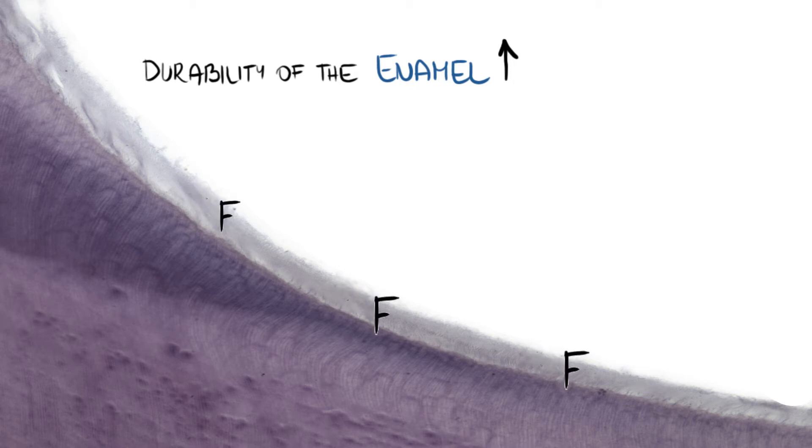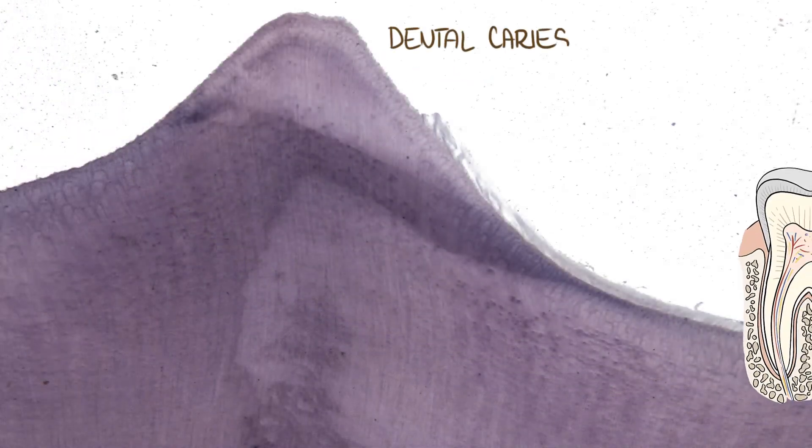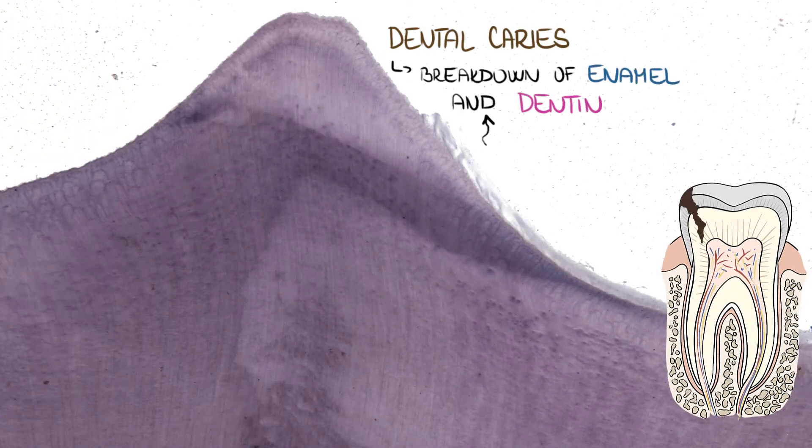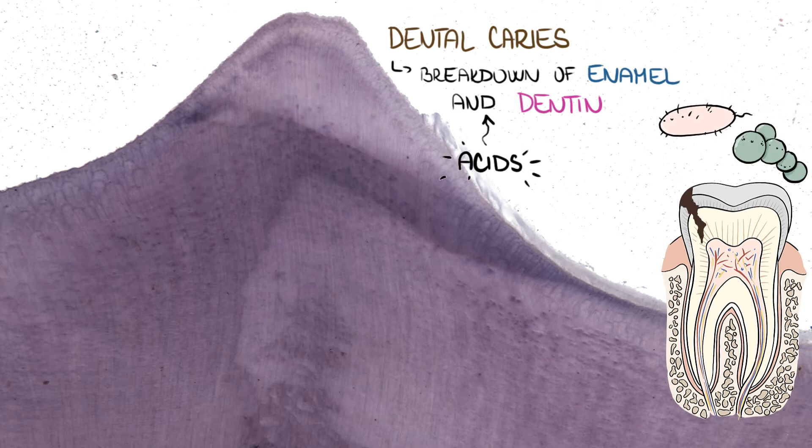Durability of enamel can be increased by exchange of hydroxyl groups for fluoride groups. That's the reason for fluoridation. Dental caries is the breakdown of enamel and dentin due to acids made by bacteria which inhabit oral cavities, exacerbated by eating sweets. So brush your teeth properly.